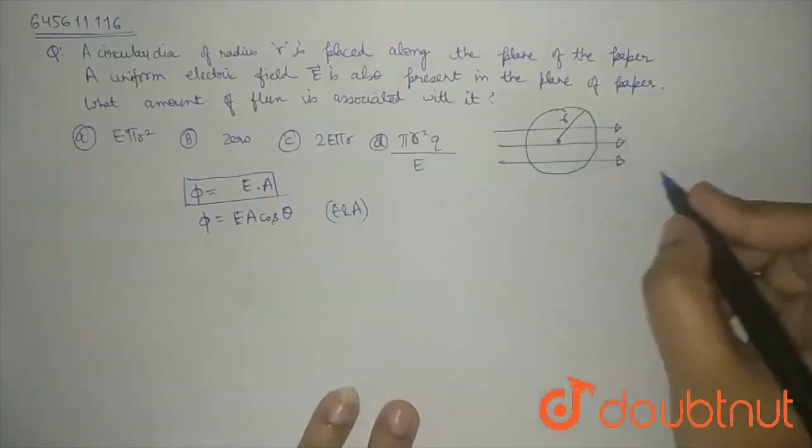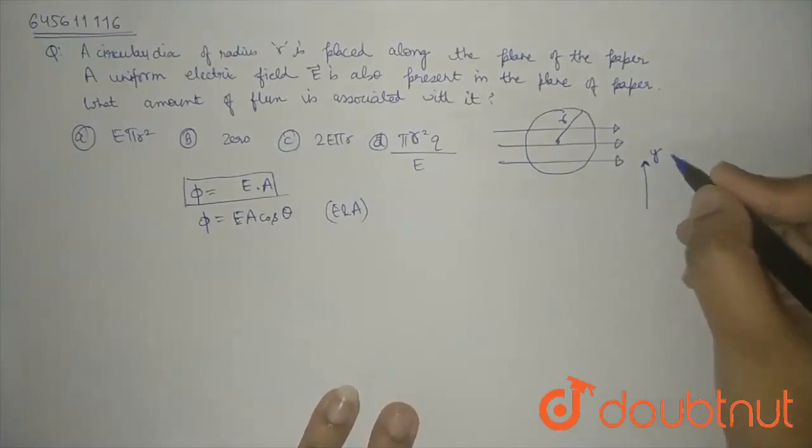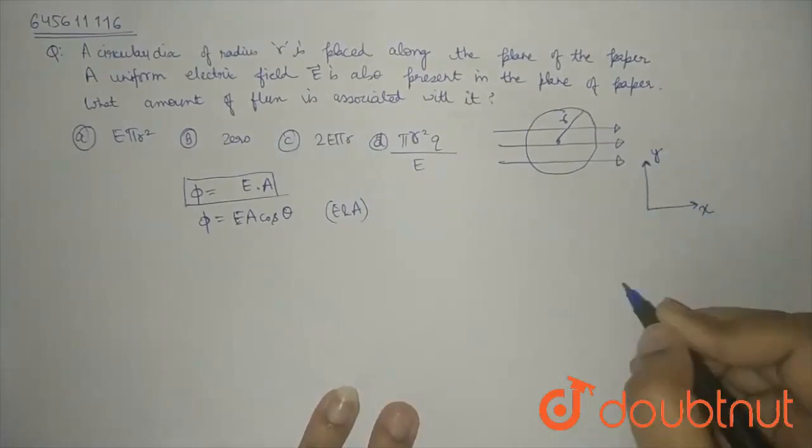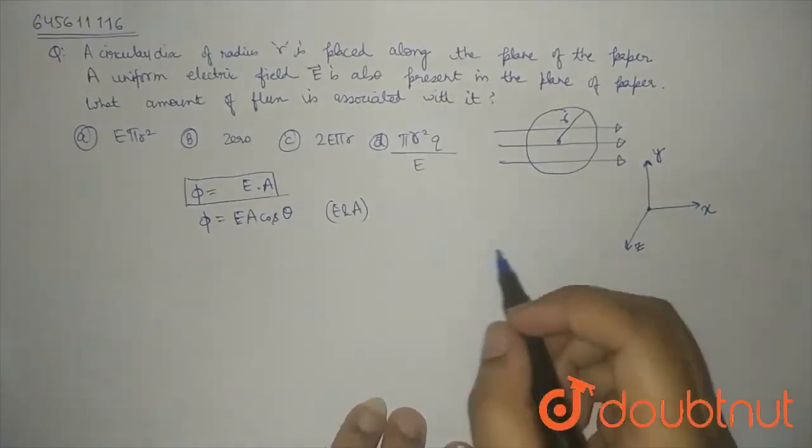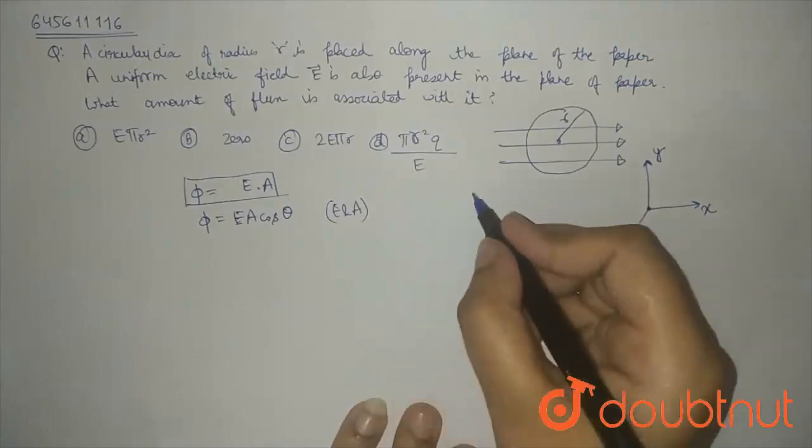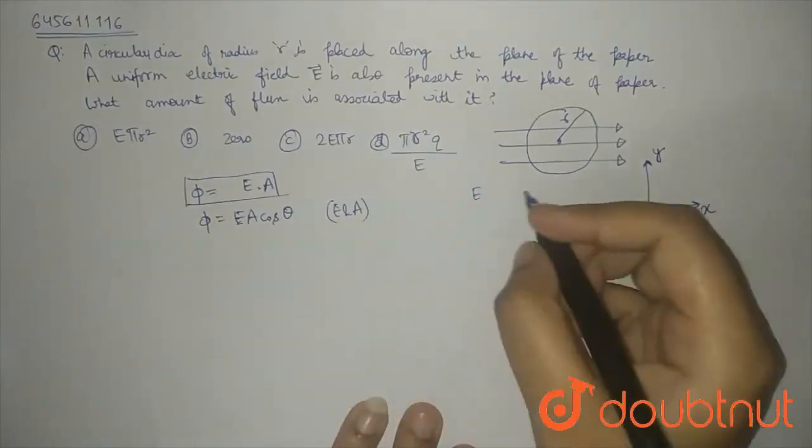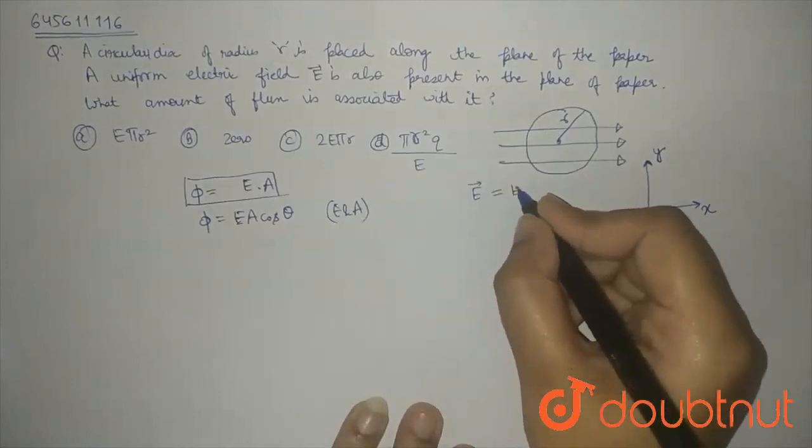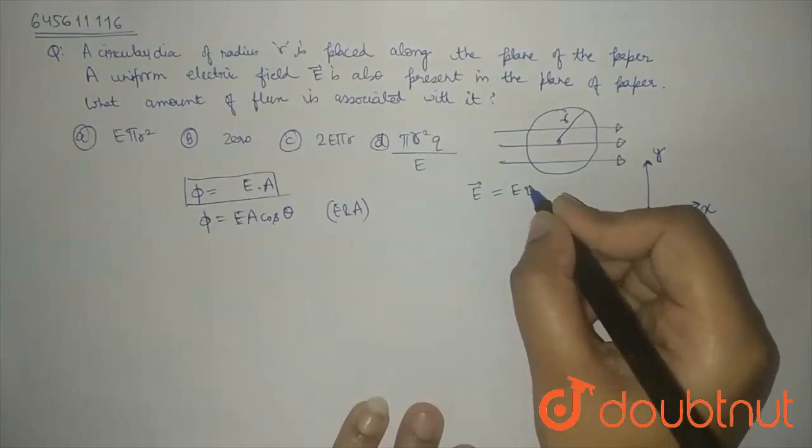So, if I create a coordinate system, this is Y direction, this is positive, this is positive X direction. And the paper which comes out is Z direction. So, we know that E direction is the X axis. So, what do I write for E vector? E i cap.